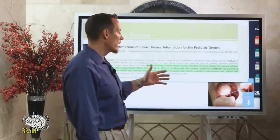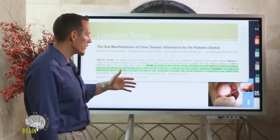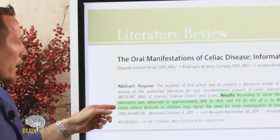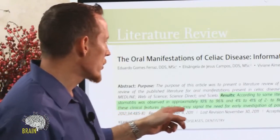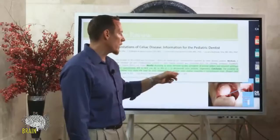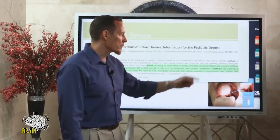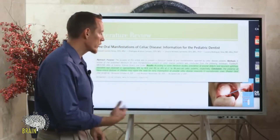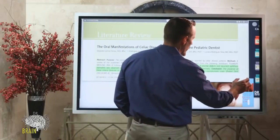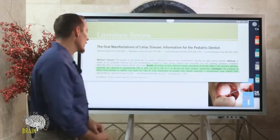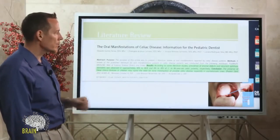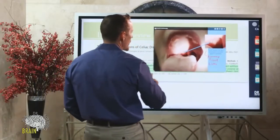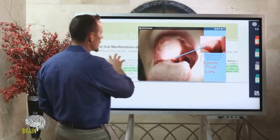These are major problems found highly prevalent in celiac disease, but also in children without celiac disease. The conclusion of the study noted that the presence of these clinical features in children may signal the need for early investigation of possible celiac, especially in asymptomatic cases — sometimes these are the only symptoms. So if your children struggle with mouth ulcers or stomatitis, it's something to consider.